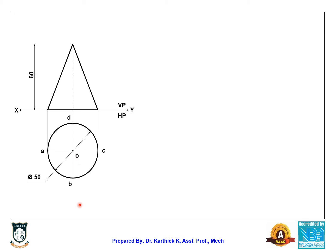Looking at the object from this direction, A, B, and C will be visible whereas D is hidden. That is why D will be represented within brackets as D-dash. We have now completed the top view and front view — step one, drawing the simple position, is complete.